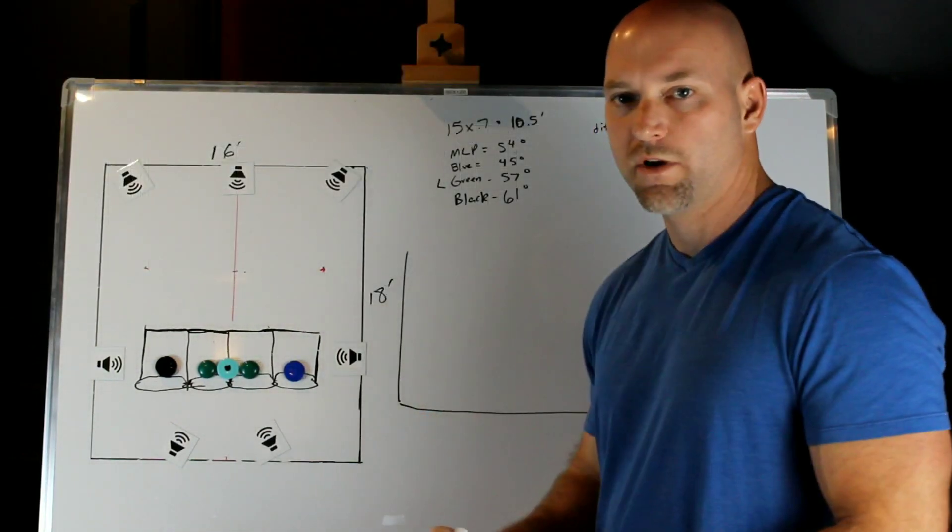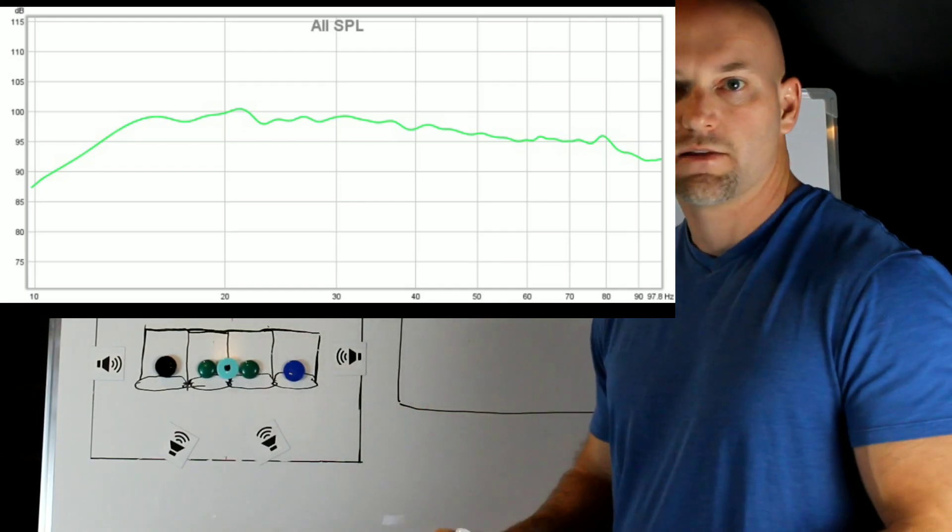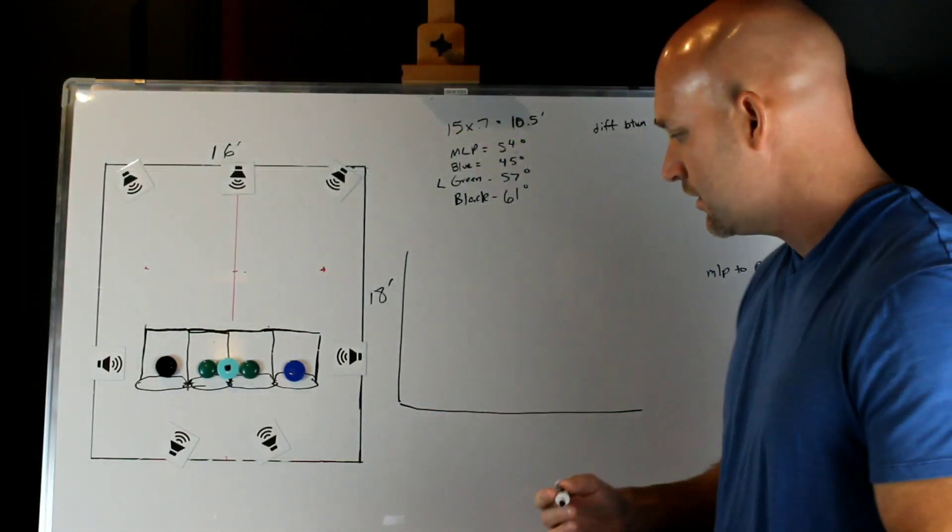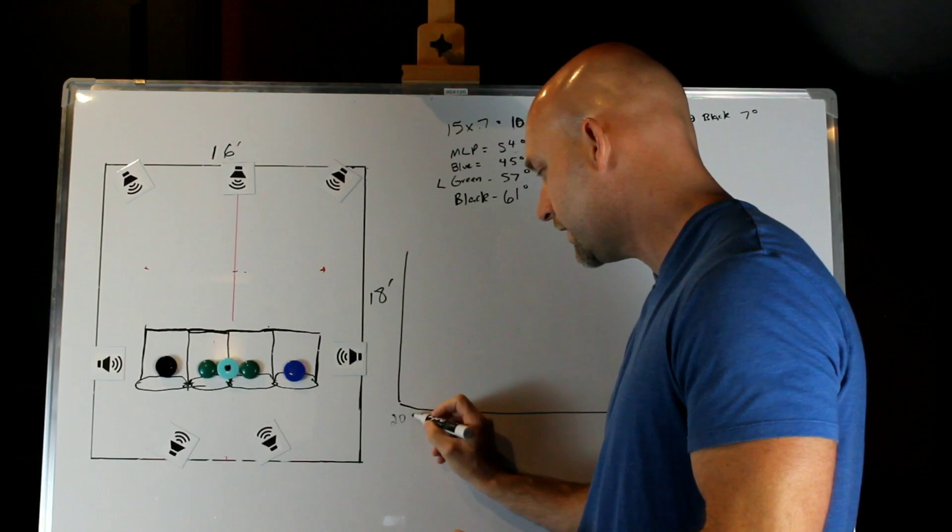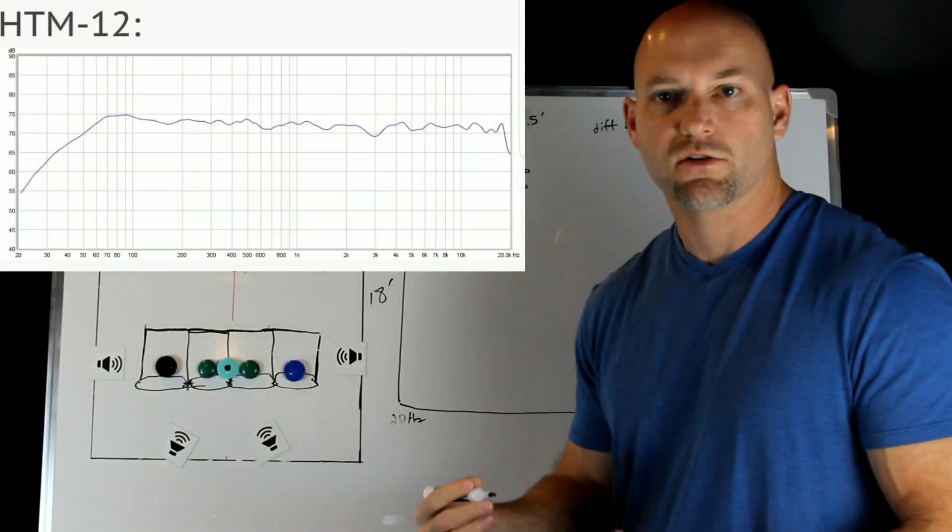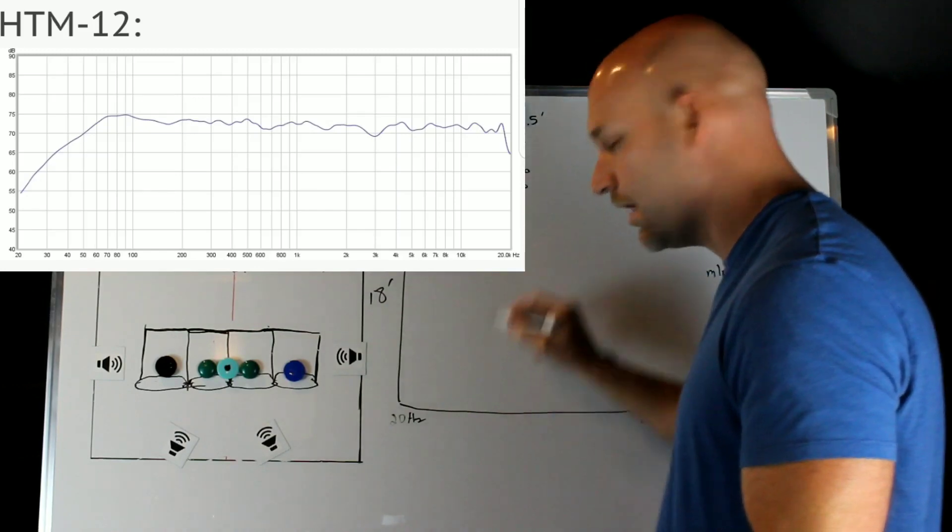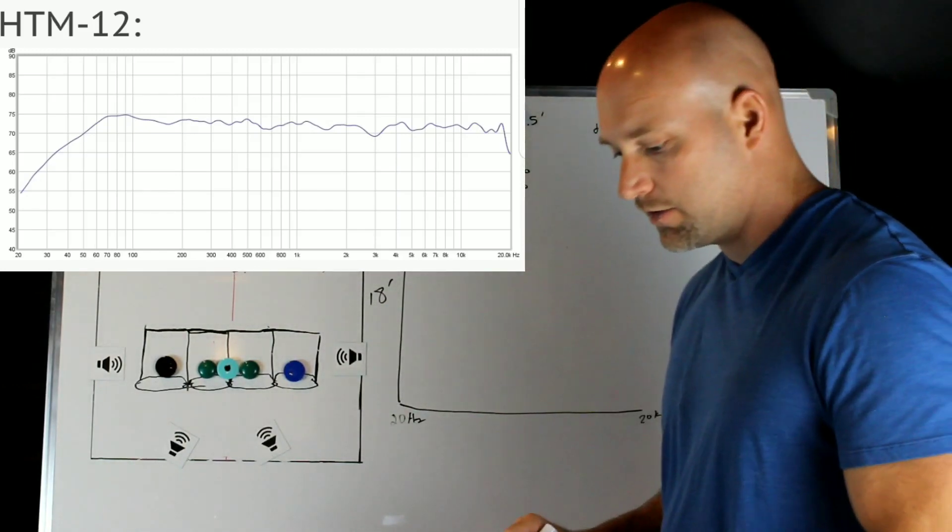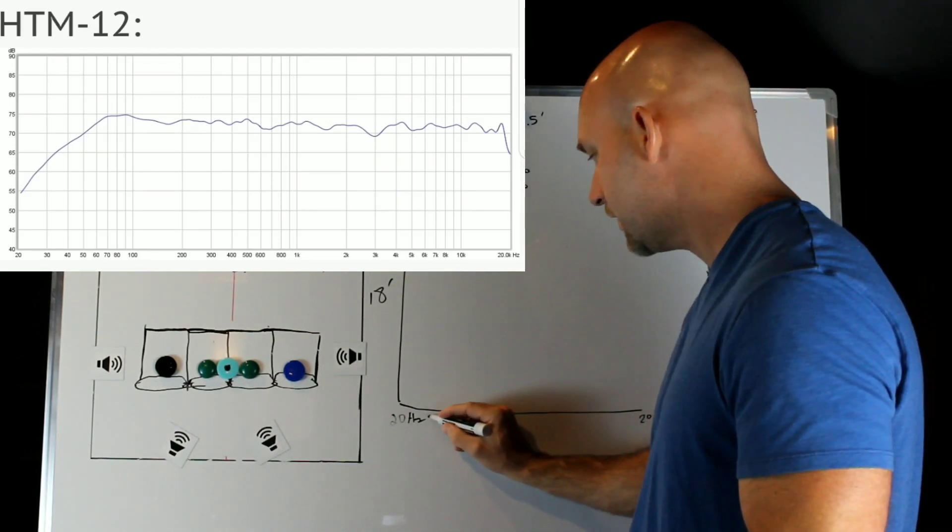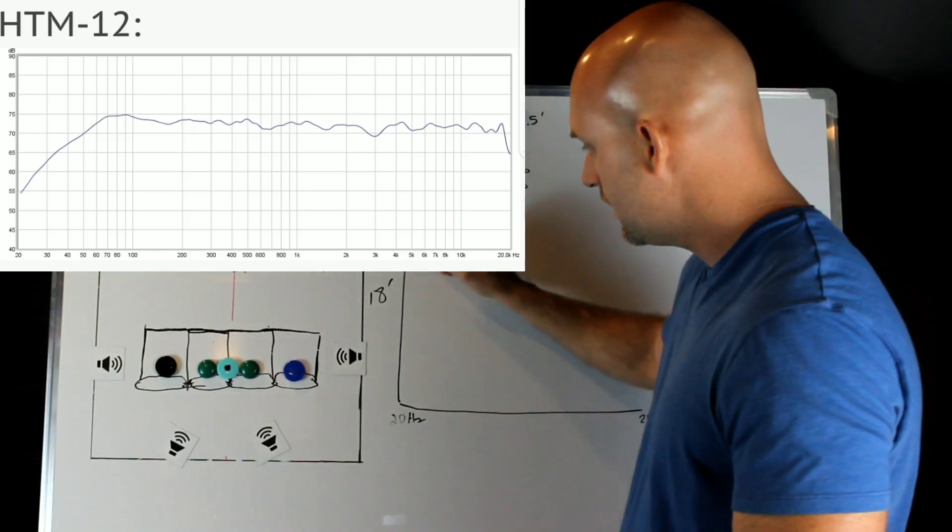When you look at the graph, you're going to have a bottom and a left side that has numbers on it. On the bottom you're going to have your frequency. For subs, down on the left it may go to 20, on the right going up in frequency it may go to 120. For loudspeakers, usually it may say 20 Hertz on the left and on the right usually they go to 20K or 20,000 Hertz. Between those two points you're going to have lines that are drawn, sometimes an octave apart. That's our frequency response left to right. As you go right, you're going higher in frequency.